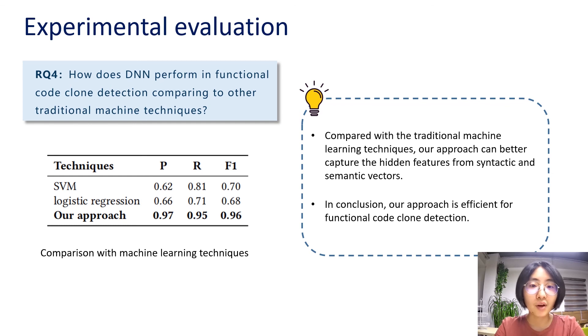The fourth research question is that how does DNN perform in functional code clone detection comparing to other traditional machine techniques? We compared with SVM and logistic regression as traditional machine learning techniques. The results can be found in the table. Compared with traditional machine learning techniques, our approach can better capture the hidden features from syntactic and semantic vectors. We have answered four research questions through such a series of experiments. And the results show that our approach is effective for functional code clone detection.